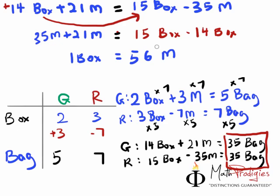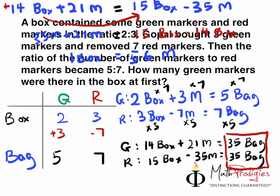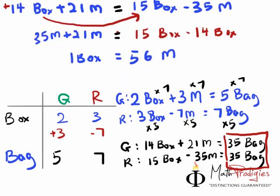In the end, the question was asking you for what? Let me see again. They're asking you for how many green markers were there in the box at first. So green markers originally were 2 boxes, right? As you can see, it's 2 boxes here. All you have to do is, therefore, green markers equals to 2 boxes times 56 markers, which will give you the answer of 112.